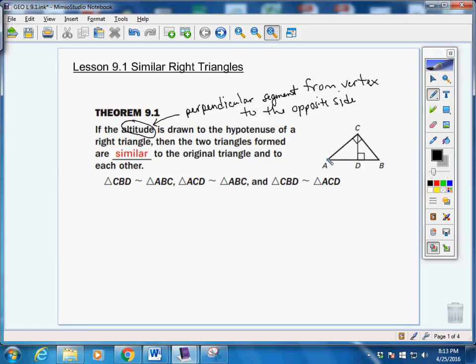You take any one of these points, and if you draw a 90 degree angle, that's called the altitude. But if the altitude, that perpendicular segment, is drawn to the hypotenuse of a right triangle, then the two triangles formed are similar, not only to each other, but to the original triangle. And that's going to be important to remember.